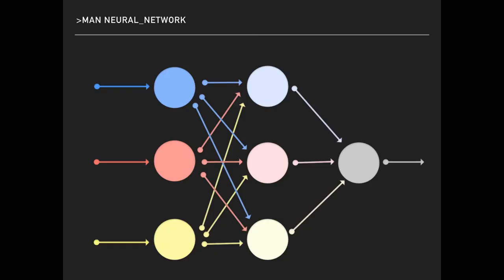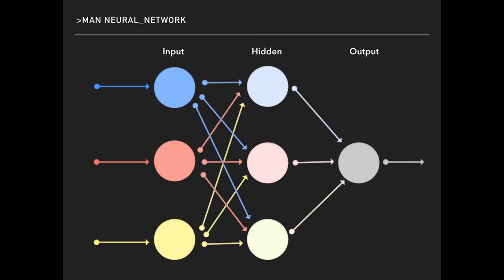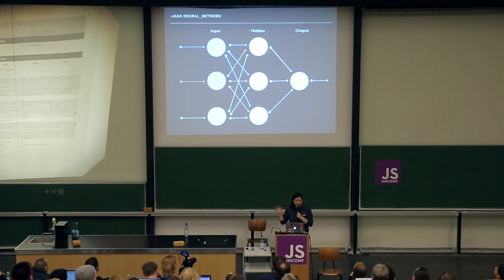Let's look at an artificial network — a simple multi-layer network. We have three layers here. The first is the input layer, where we receive our input. Then we have a hidden layer — I just chose to have one hidden layer, but it doesn't really matter, you can try out what works for you. And then we have an output layer. In this graph, the arrows would be our dendrites or axons and the circles would be our neurons.